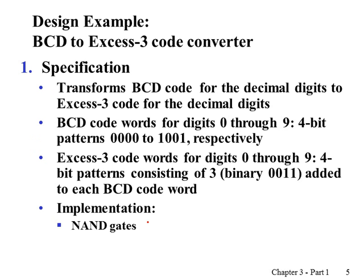Here is an example to learn the general design procedures. Suppose we are going to design a BCD to Excess-3 code converter. The specification is that the system transforms BCD code for decimal digits to Excess-3 code for decimal digits. The input is BCD code, which requires four bits, using only 0000 to 1001 to encode decimal digits zero through nine. The output is also four bits representing the Excess-3 code, and we want an AND/OR gates only implementation.